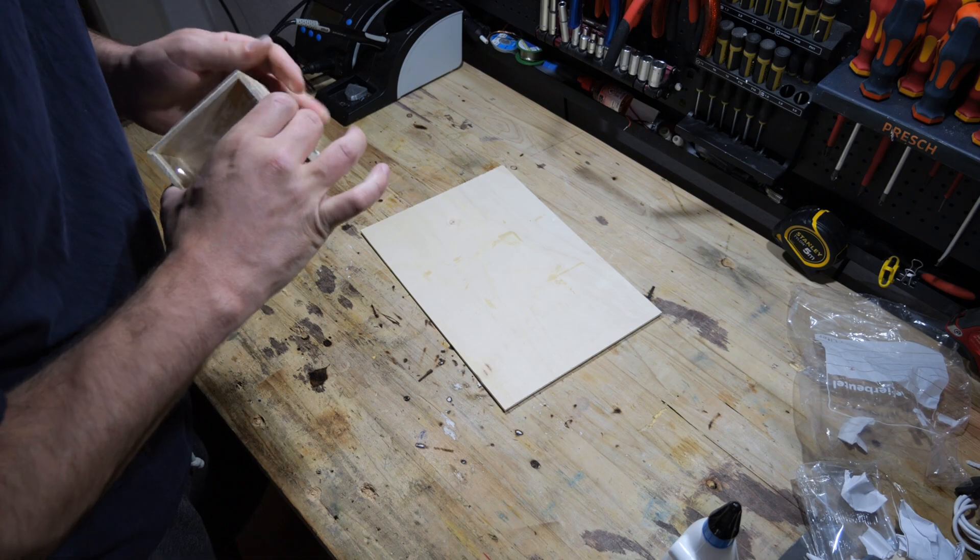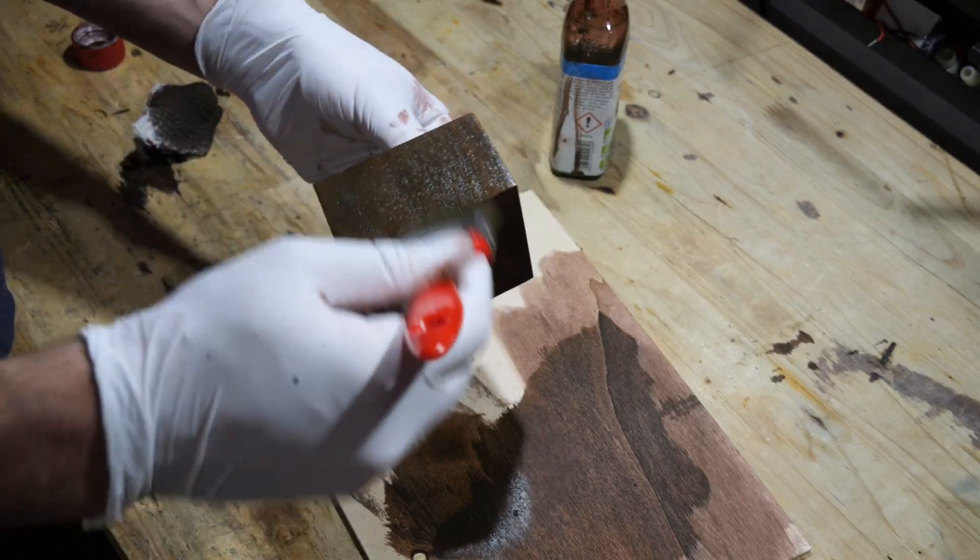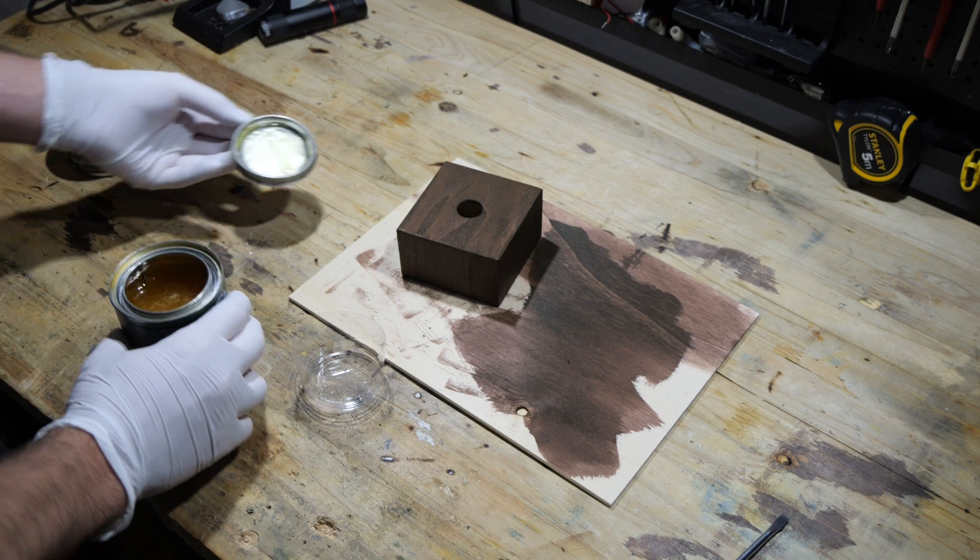After the glue dried, I sanded the box a bit and then stained it. Once the stain dried, I coated the wood with Rubio Mono coat.